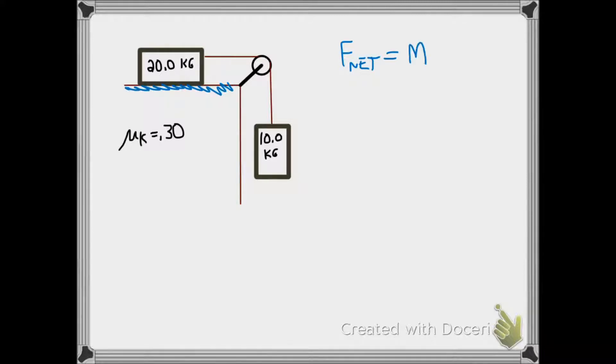We'd like to find the system acceleration. We use F net equals MA, but we use acceleration for the whole system, which is the string attached to the two blocks. Our frame will be clockwise as positive, because if it moves at all, it will move clockwise.